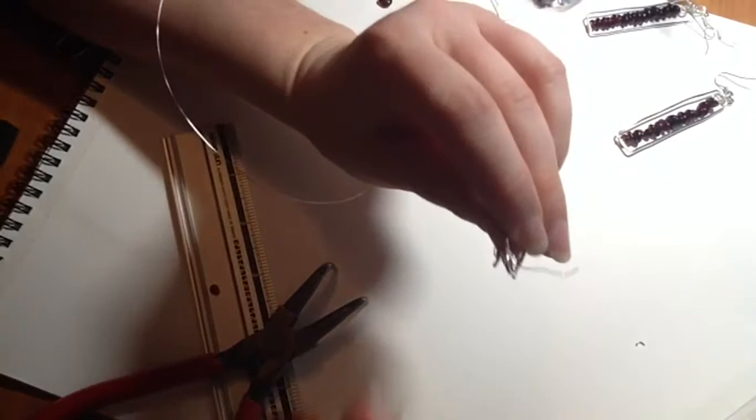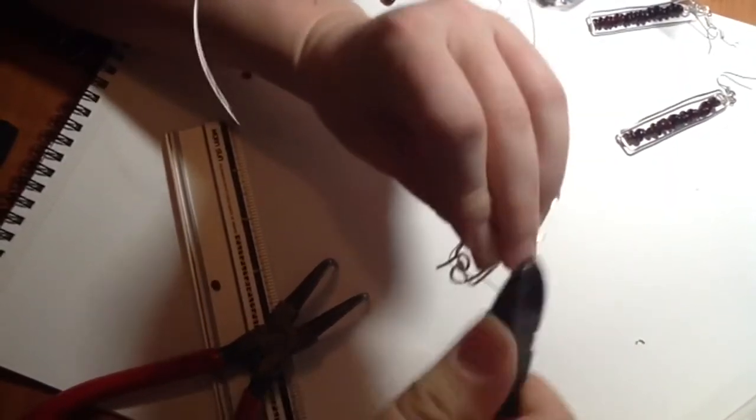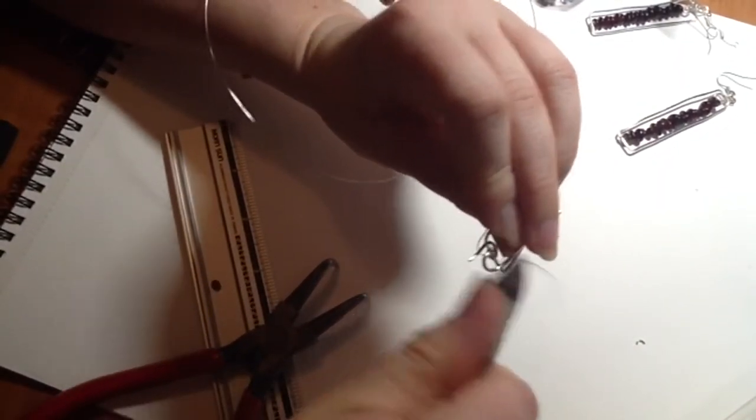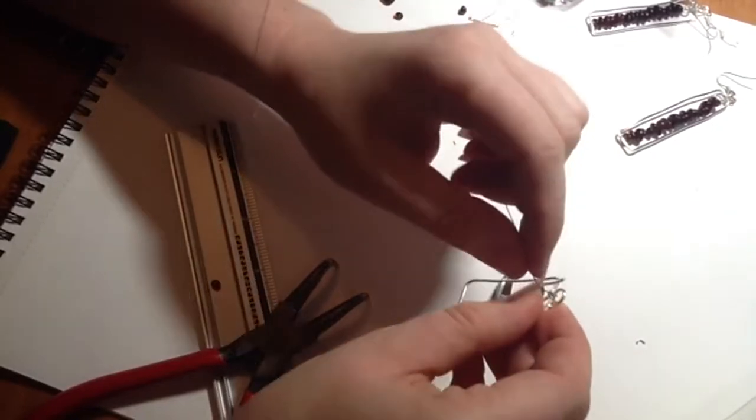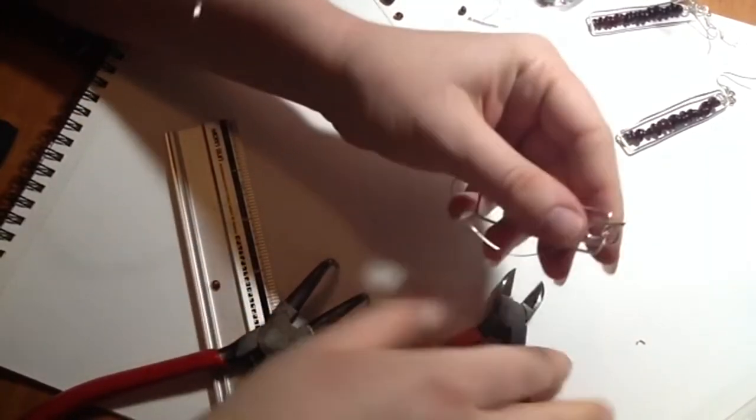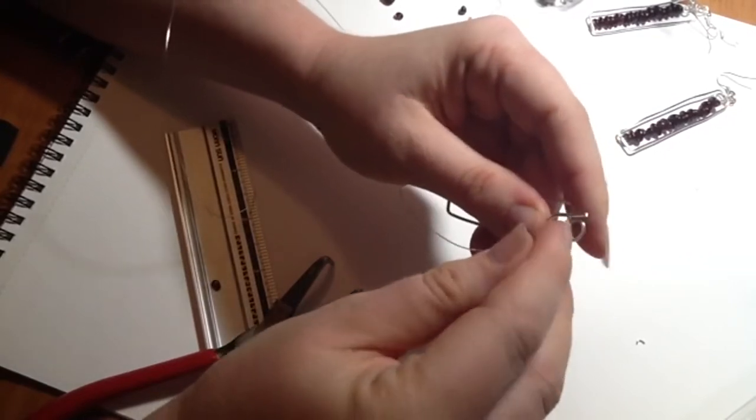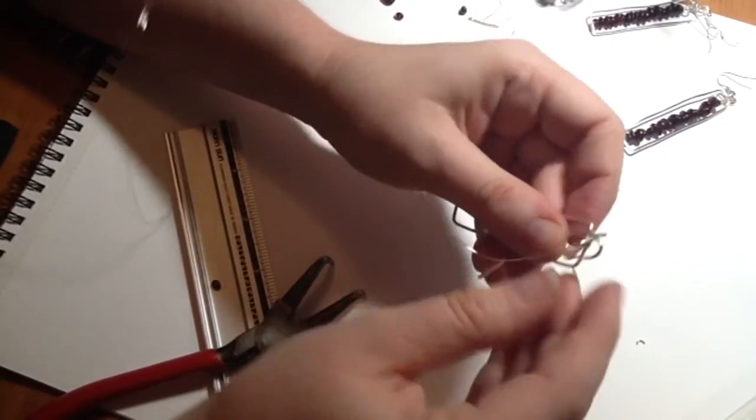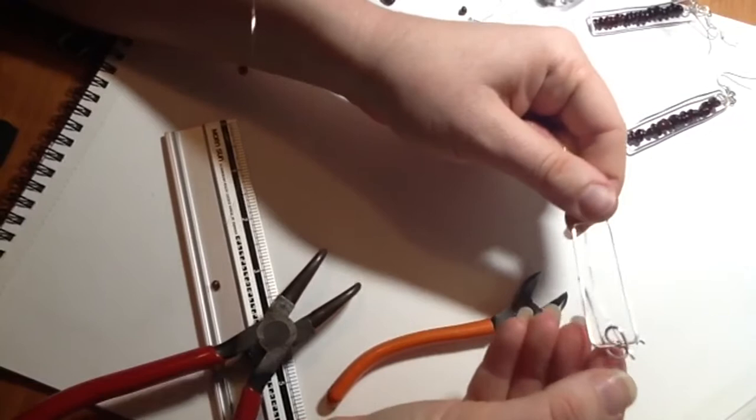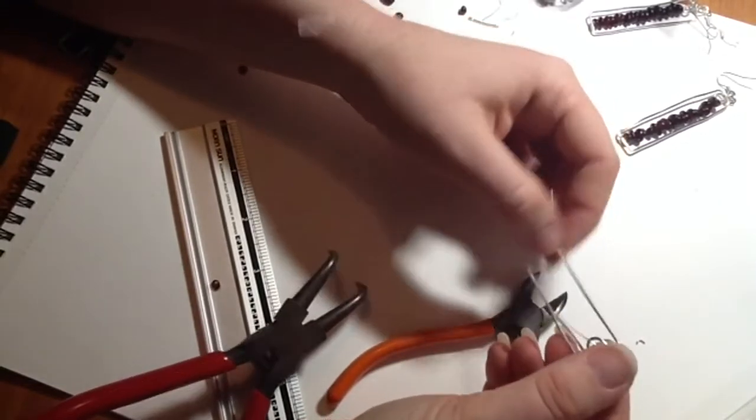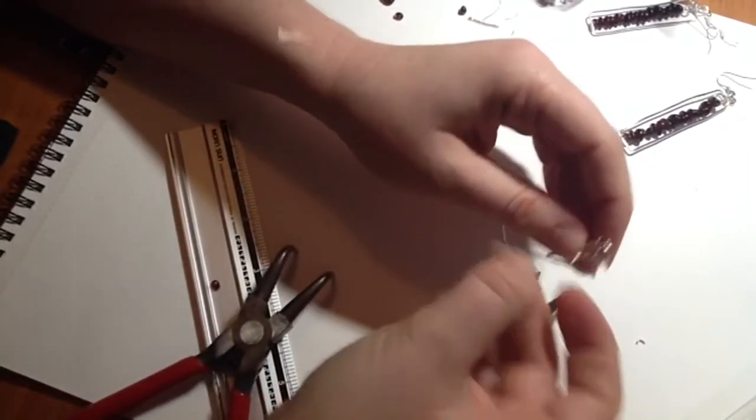Okay, so we'll just trim the excess of that 26 gauge wire. What you could do if you didn't want to put a loop in the top, you could just pull your wire down like that and thread the rest of your beads on, but I think it looks quite sweet with the little loop in the top.